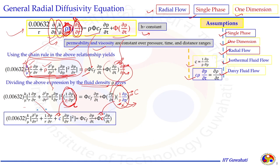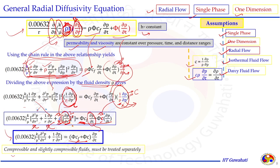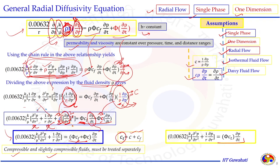The equation becomes a second-order derivative with respect to pressure, a first-order derivative with respect to pressure, and a pressure square gradient term. The term C multiplied by the square of the pressure derivative is a very small quantity that can be ignored. The final expression includes the same k/μ terms and on the right-hand side we have φ multiplied by compressibility of rock plus φ multiplied by compressibility of fluid — these can be combined as total compressibility C_t for slightly compressible fluids.